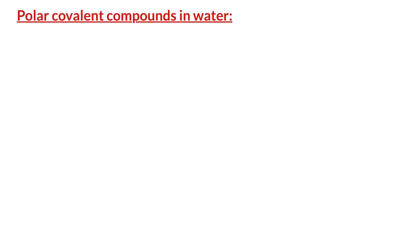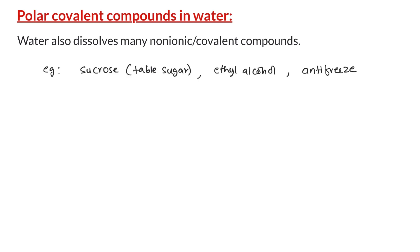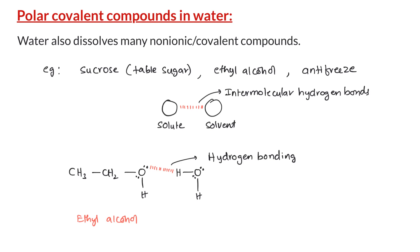Now we will discuss how polar compounds are dissolved in water. Water also dissolves many non-ionic or covalent compounds. The forces of attraction between the solute and solvent particles are intermolecular hydrogen bondings. All these molecules mentioned above have at least one hydrogen atom directly connected to an oxygen atom, which can form intermolecular hydrogen bonding with water molecules. These strong intermolecular forces of attraction dissolve these polar molecules in water.